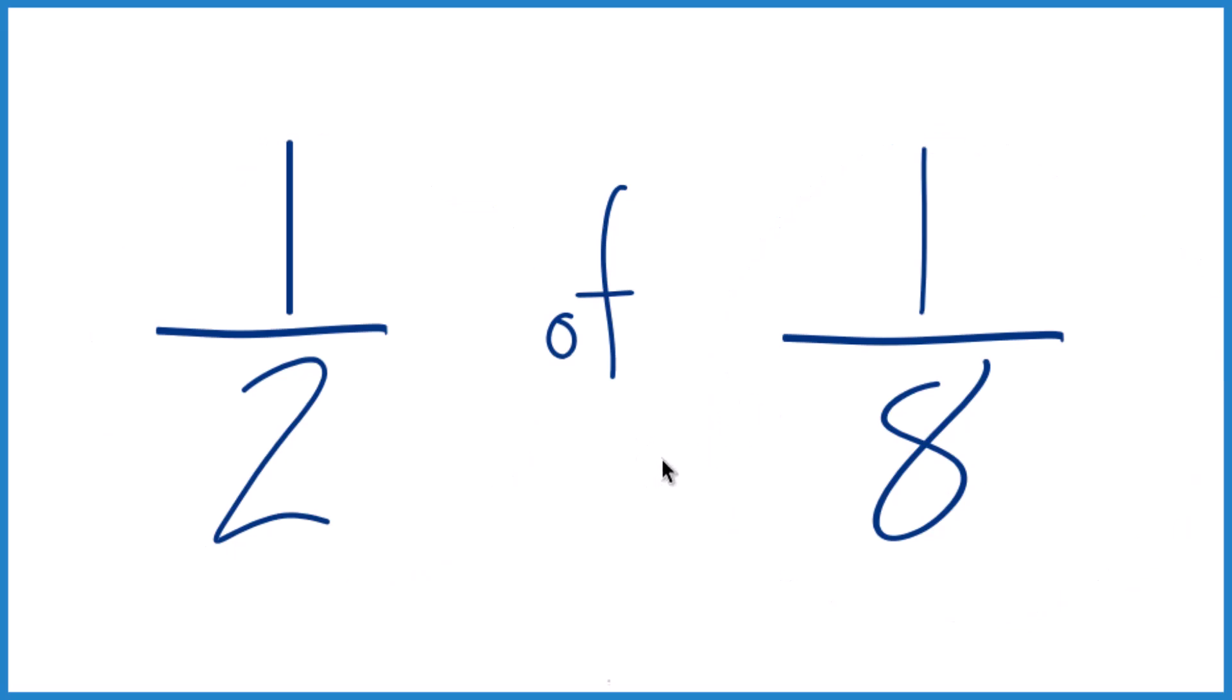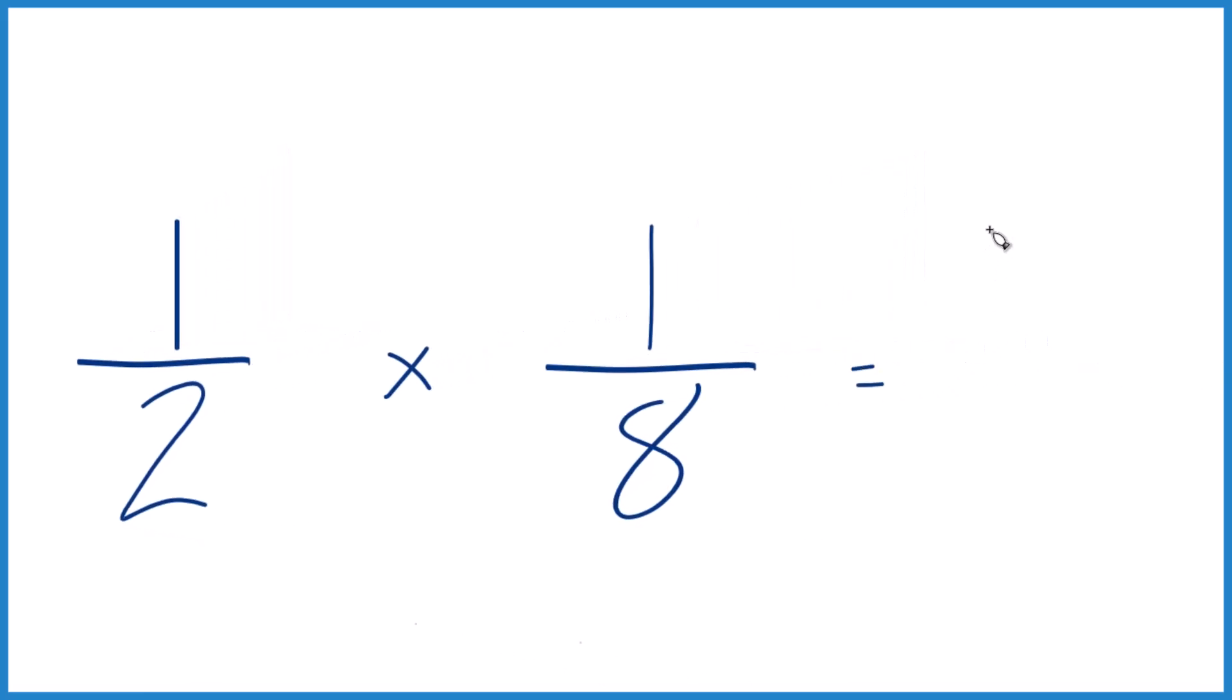So the first thing to do, this 'of' right here, we can think of that as multiplication. So that makes it kind of easy because we're going to multiply the numerators. One times one, that equals one, and then the denominators. Two times eight, that is sixteen.